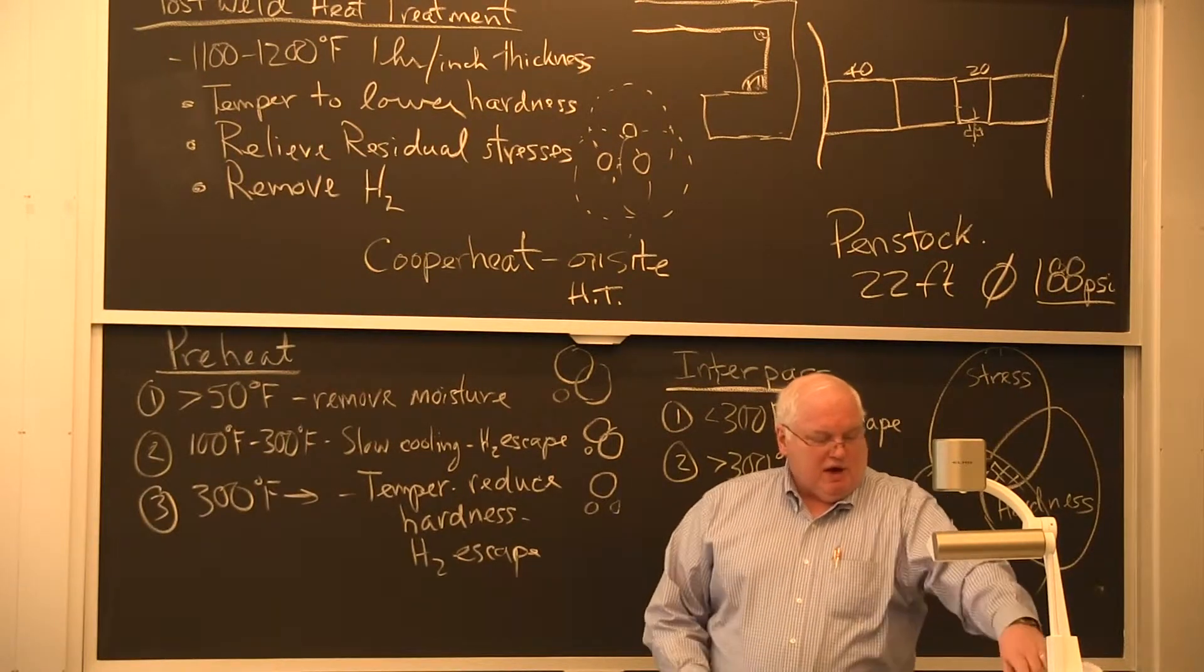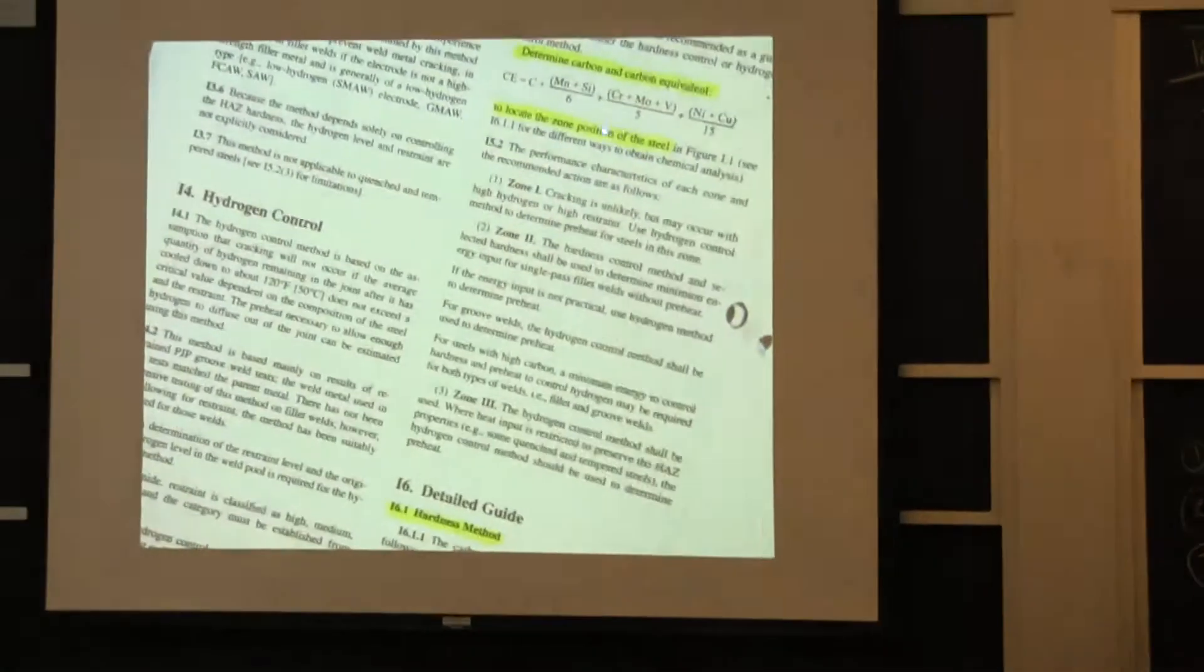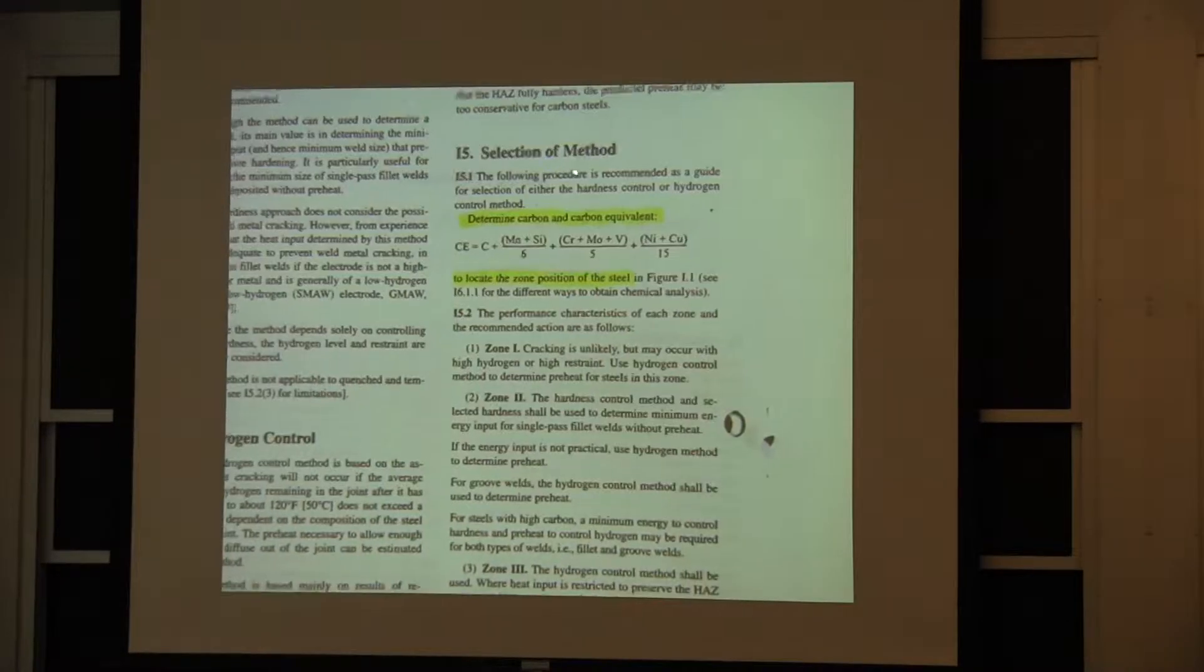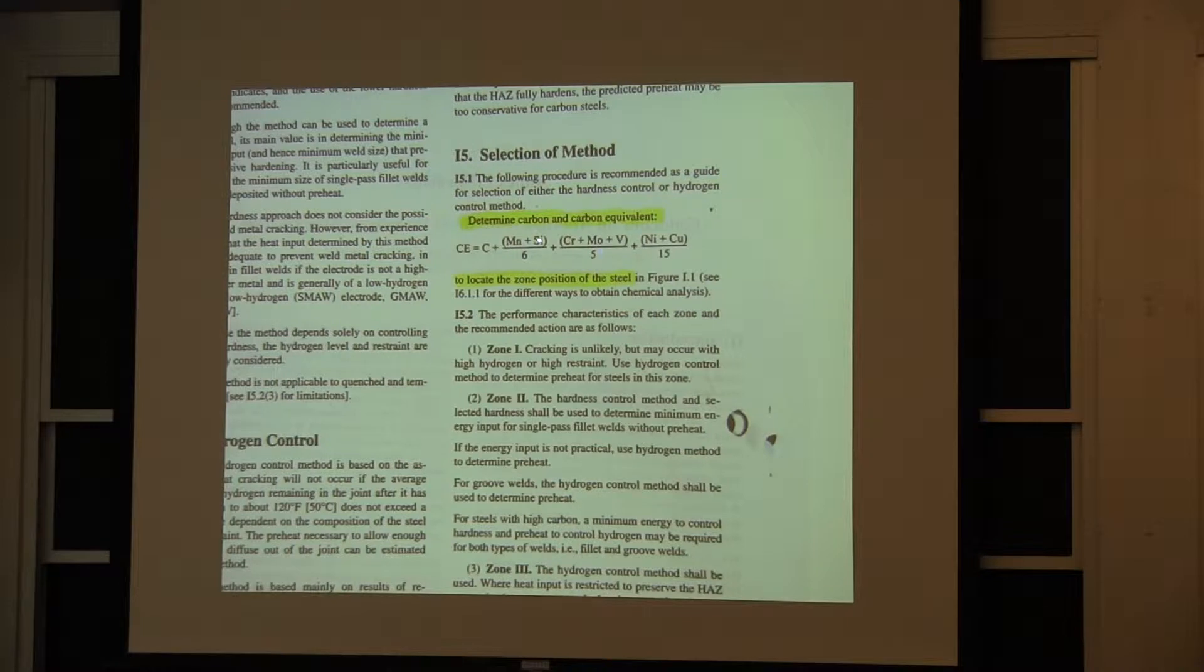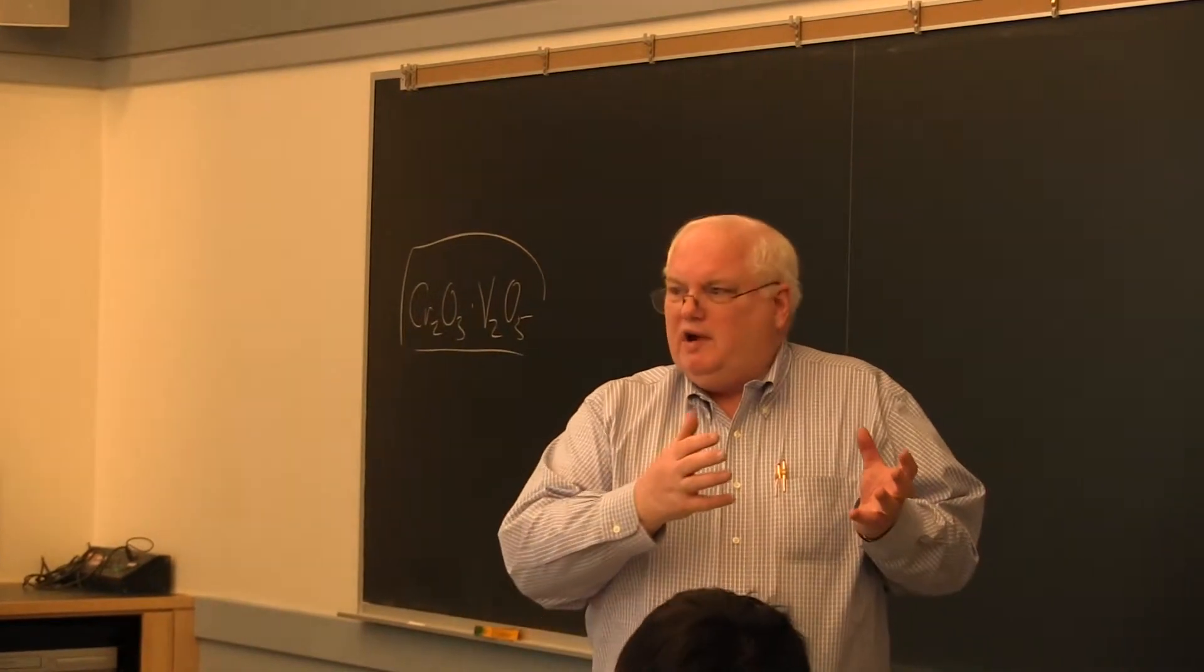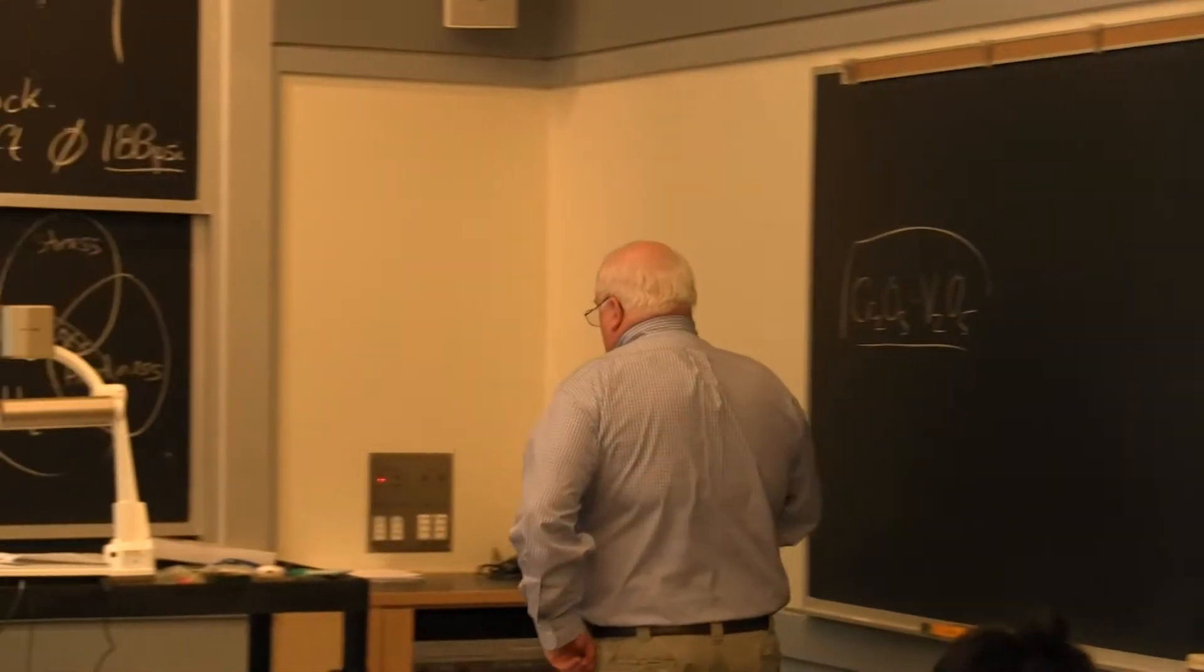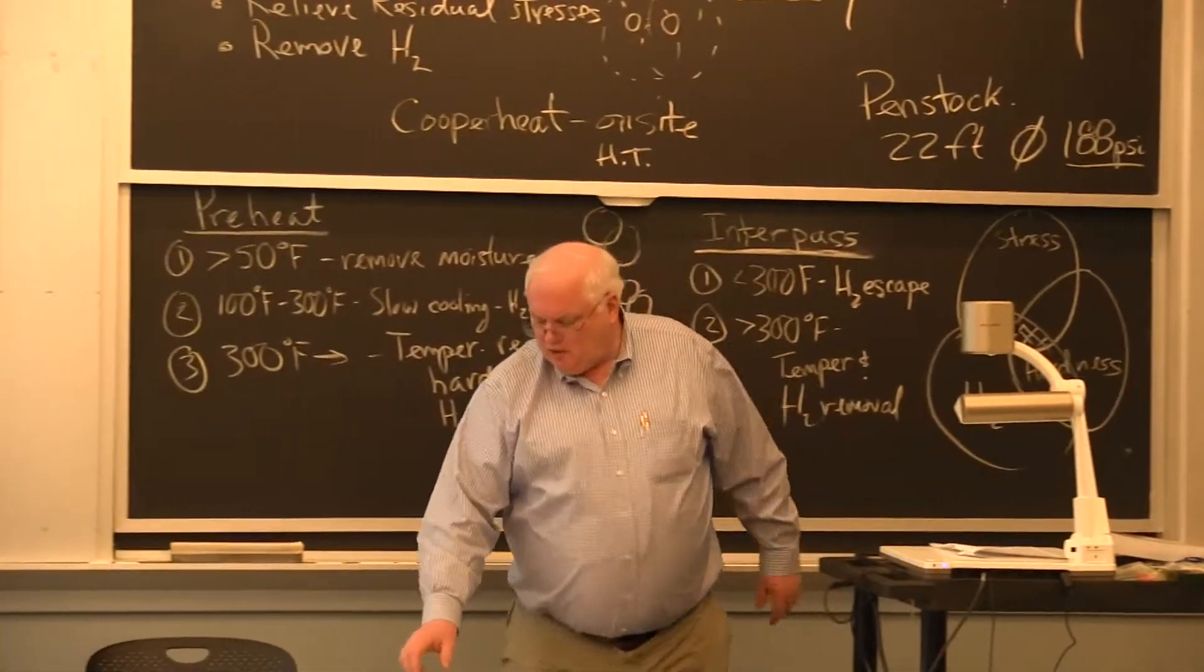One or the other. If I turn to the next page, it says you've got to first select the method, and this whole appendix is which method and how to use the method. The first thing you do is determine the carbon and carbon equivalent. Well I told you carbon determines the hardness, which happens to be one of these things on the Venn diagram. And the other thing that's important is hardenability, which is the depth of hardening.